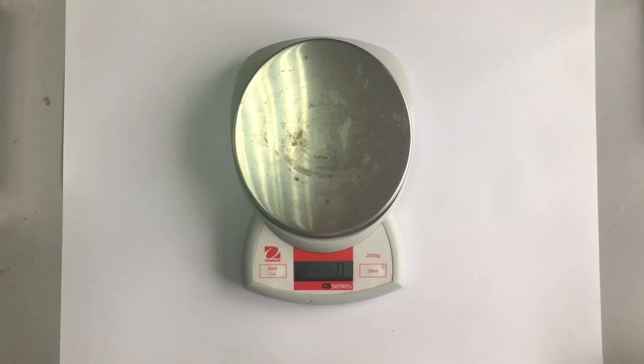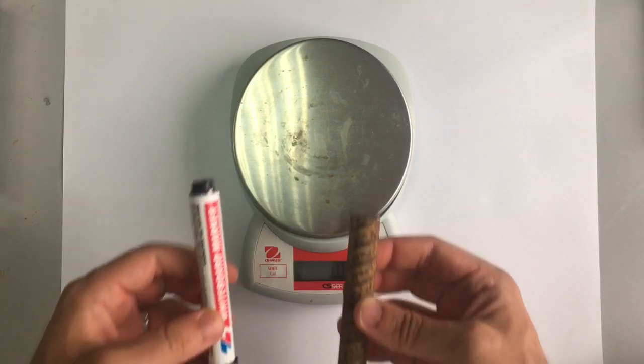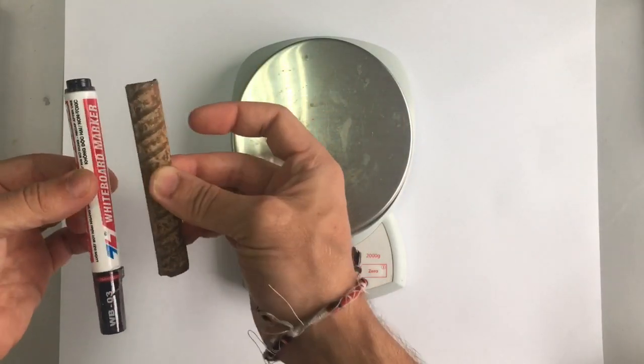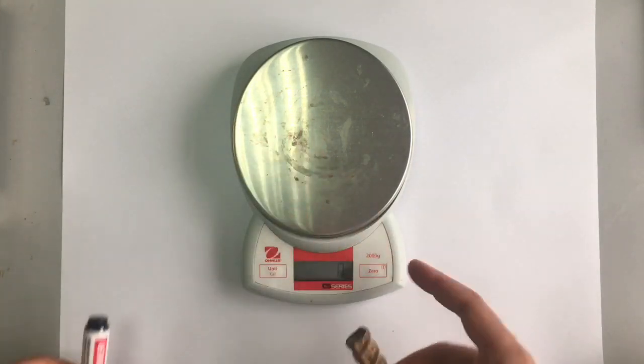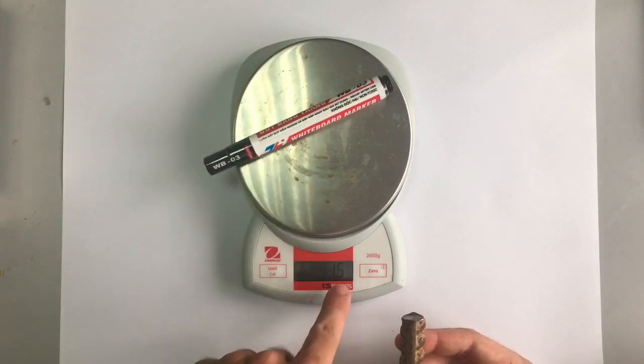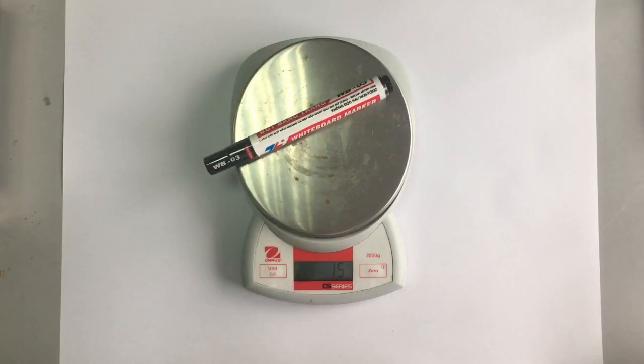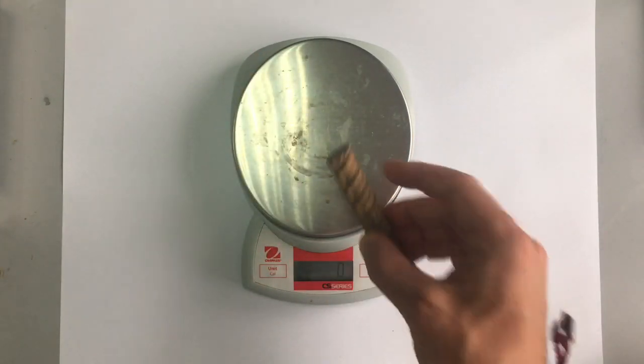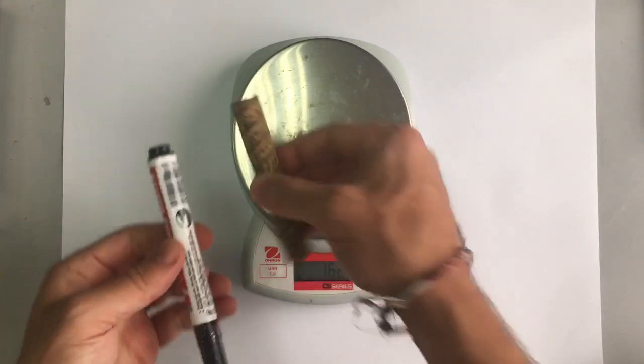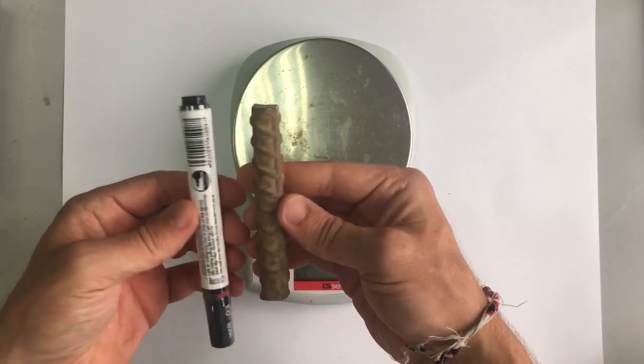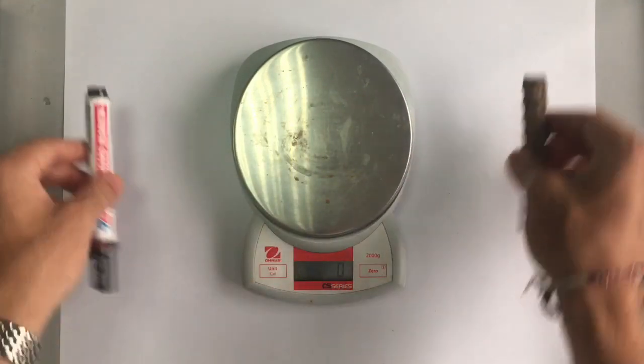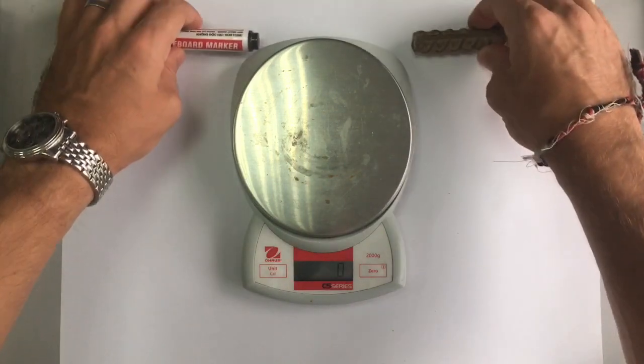Now the mass leads us on to talking about another thing, and that is density. Now you can see these two objects. One of them is a pen and one of them is a piece of metal. Here we've got some scales so we can find out the mass of each one. Now if I put the pen on the scales, 15 grams, hopefully you can see that. If I put the piece of metal on the scales, that's 162 grams. Now these objects are very similar in size, so why is this one so much heavier than this one? Well the answer comes down to density.